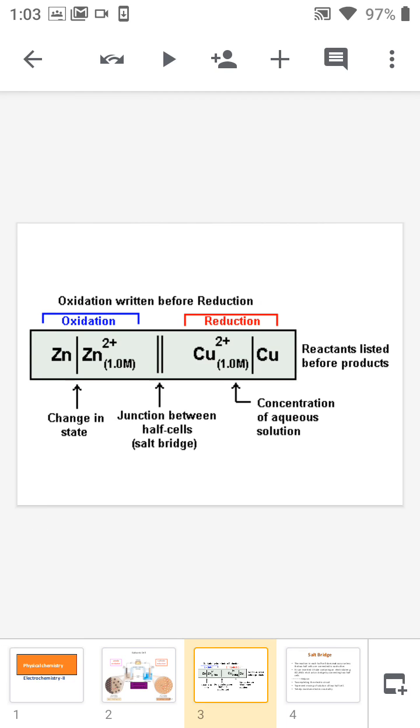So the single half cell is represented in a general equation as metal slash its salt solution. So here, if you are considering the zinc electrode, zinc slash Zn2+. And if you are considering the copper half cell electrode, copper slash Cu2+.